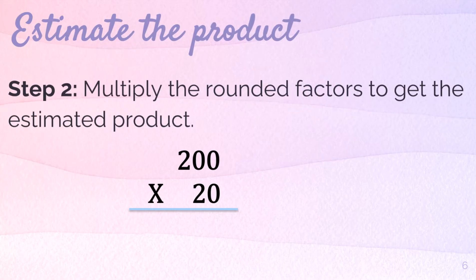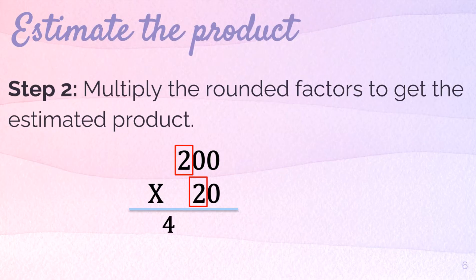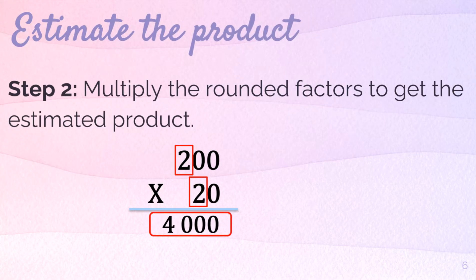For the second step, multiply the rounded factors to get the estimated product. So the factors are 200 times 20. Just to give you a technique, just multiply first the non-zero numbers. So that is 2 times 2, which is 4. And now, just count the number of zeros and put it as your product. So the final answer is 4,000.